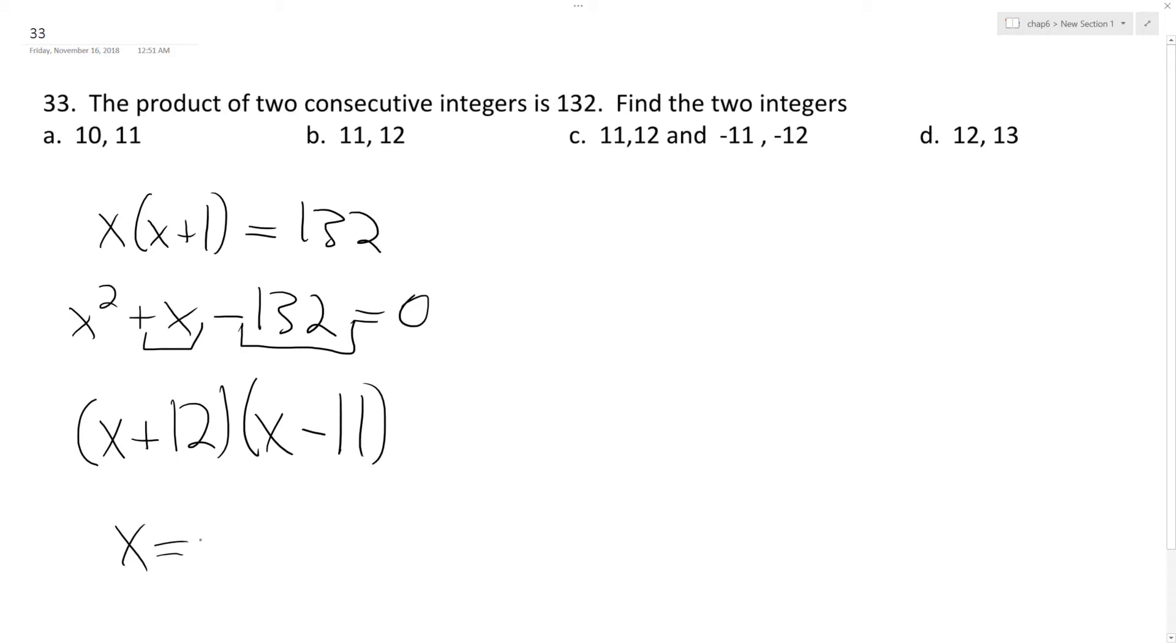So that means even though we end up with negative 12 and 11 for our roots, that's not correct. It's just going to be 11 and 12, because 12 is one more than 11, and 11 times 12 is 132.